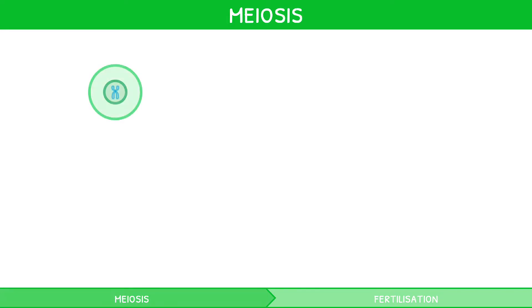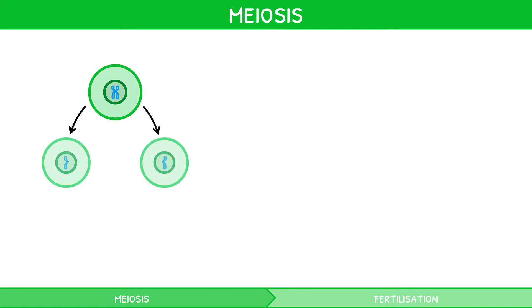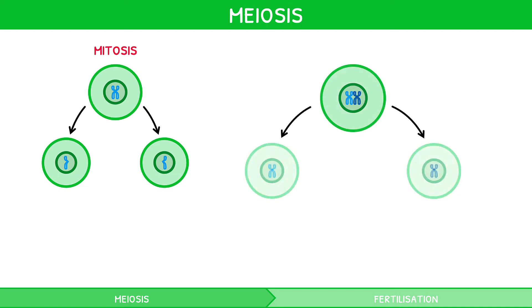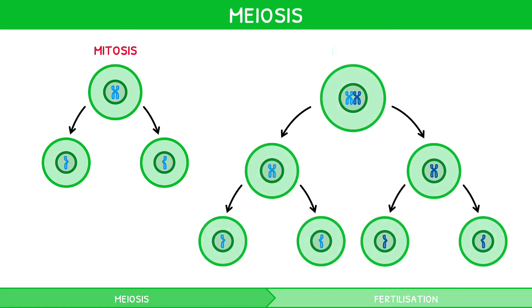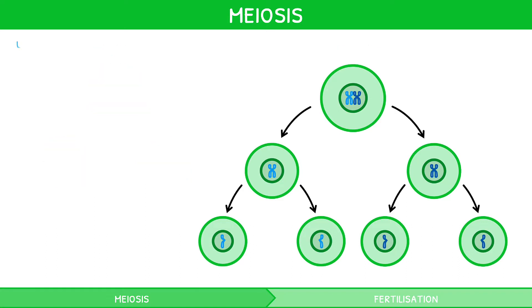As mentioned in our final video of our IB Biology Topic 1 video series, diploid nuclei replicate themselves via the process of mitosis. However, a diploid nucleus can also divide via a process known as meiosis to produce haploid gamete cells. Meiosis is formally defined as the division of a diploid nucleus to produce four haploid nuclei.